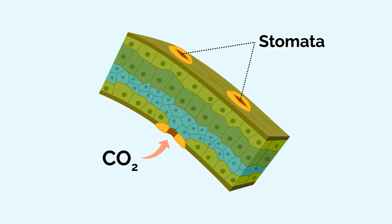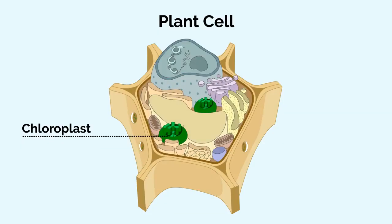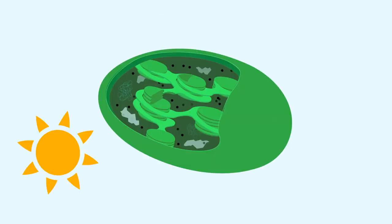Once inside a plant, the carbon dioxide is broken down, and some of the carbon ends up in the chloroplasts. Chloroplasts are special cell parts that hold chlorophyll, the molecules that make most plants green. Chloroplasts are also where photosynthesis takes place.